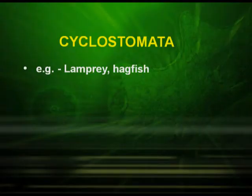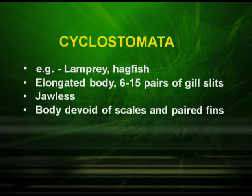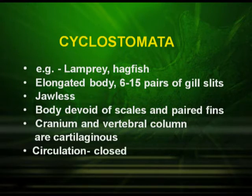We will now deal with the class Cyclostomata. Lamprey and hagfish come under this. They have an elongated body and about six to fifteen pairs of gill slits. These organisms are jawless. The body is devoid of scales and paired fins. Cranium and vertebral column are cartilaginous in these organisms and the circulation is of closed type.